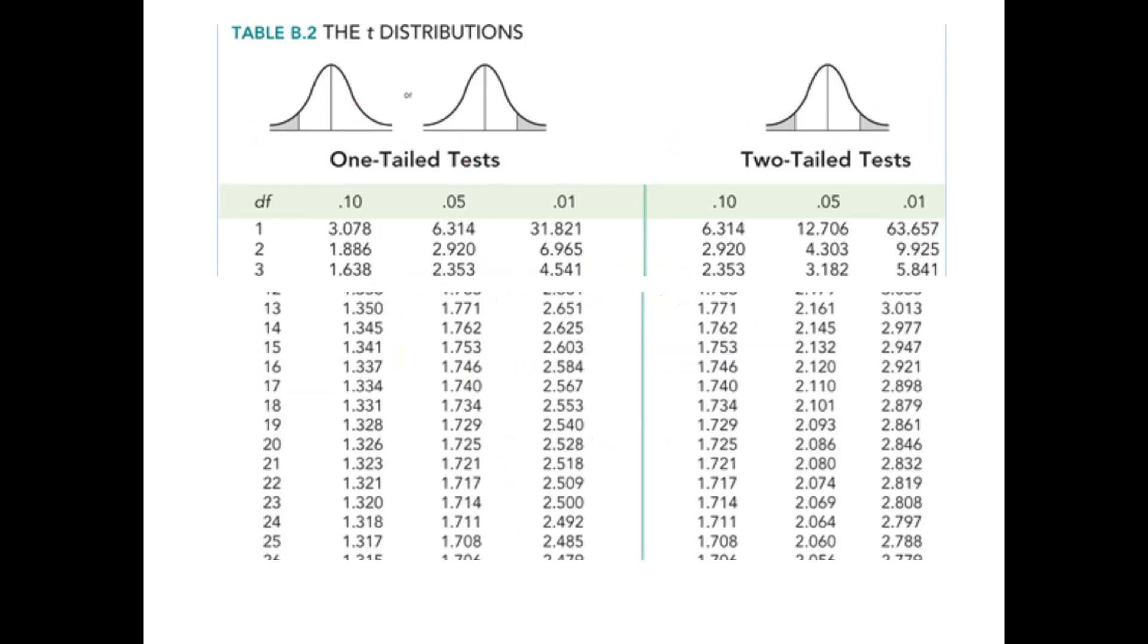Step four is going to be N minus two. We've got degrees of freedom of 18, and we're going to use 0.05. I'm not sure it says on the problem, but we'll use 0.05 either way. I'm going to come down here to 18, go across to 0.05. It's plus and minus 2.10. So our cutoff score is 2.10.